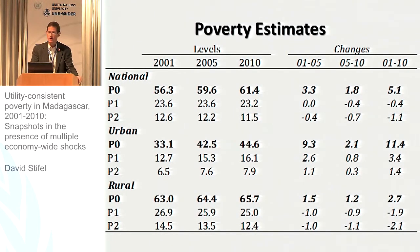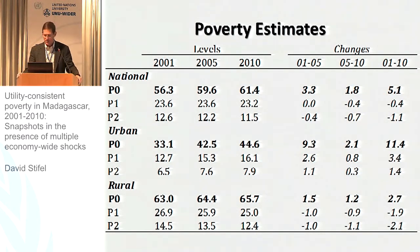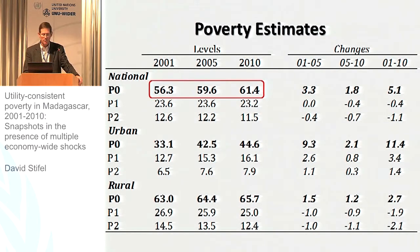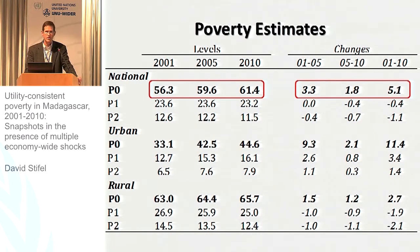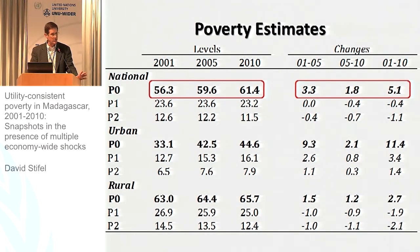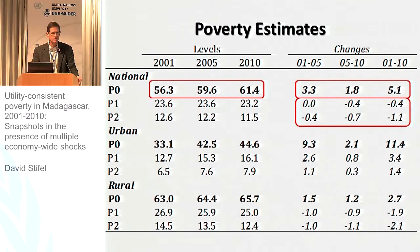For our poverty estimates using the toolkit, the consumption aggregate is constructed and the toolkit is applied in which we do the revealed preference tests and get these utility-consistent poverty estimates. What we find at the national level is that poverty has risen over the course of the decade, with a significant increase occurring in the first half of the decade in terms of the headcount ratio. However, there is not a whole lot of action among the more poverty-sensitive measures of poverty.